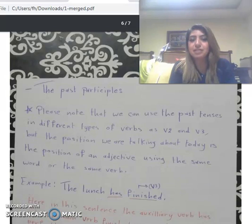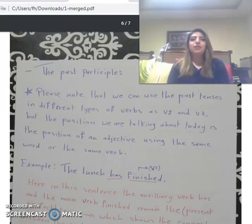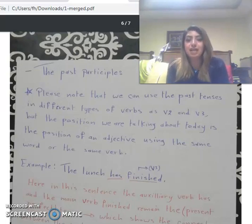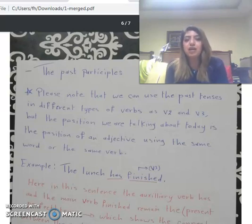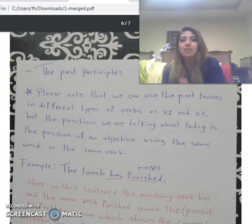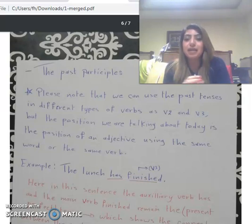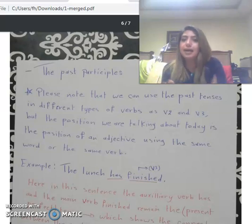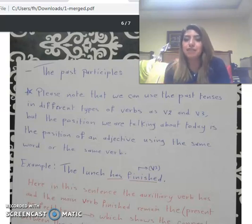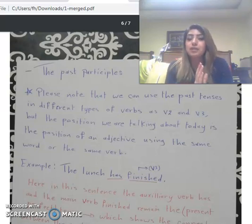The third subject is the past participle. Please note that we can use past tenses in different types of verbs — verb two and verb three. But the position we are talking about today is the position of an adjective: using the verb three (past participle) not as a verb but changing its position from a verb to an adjective.